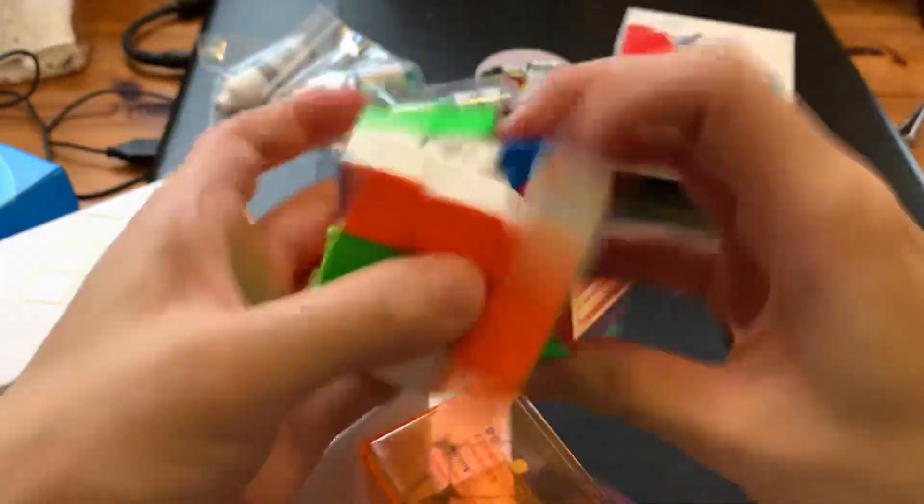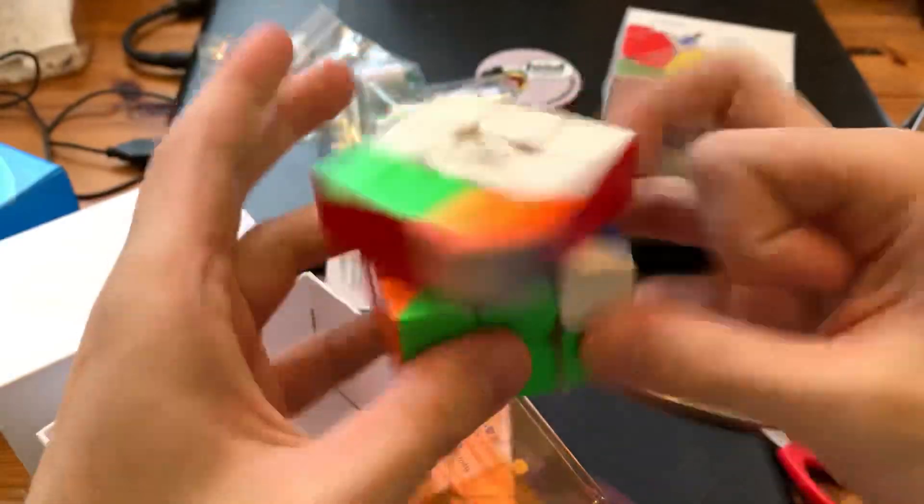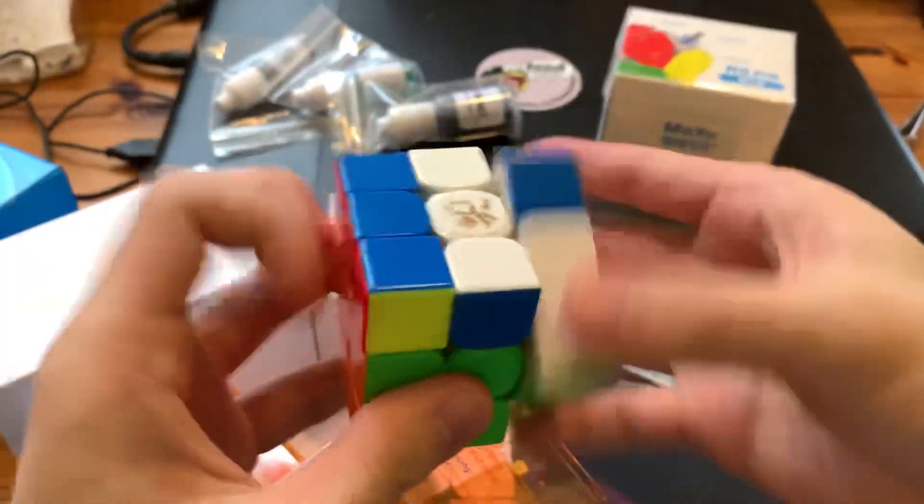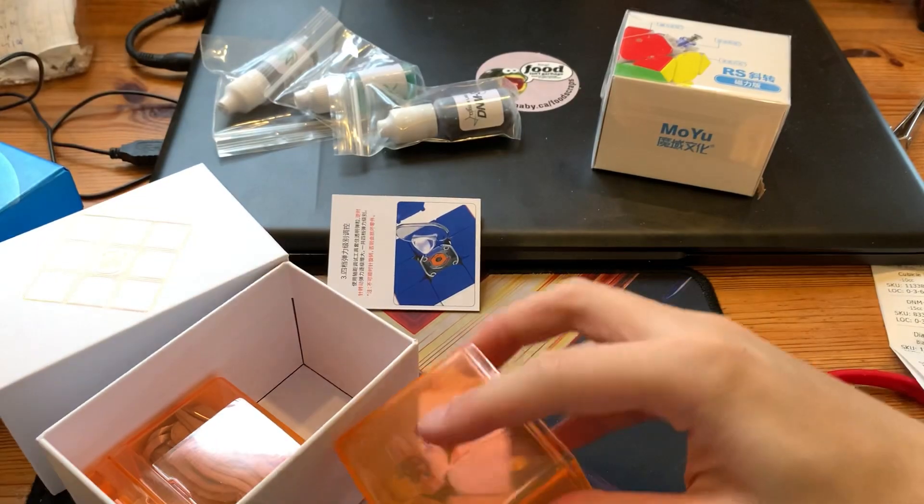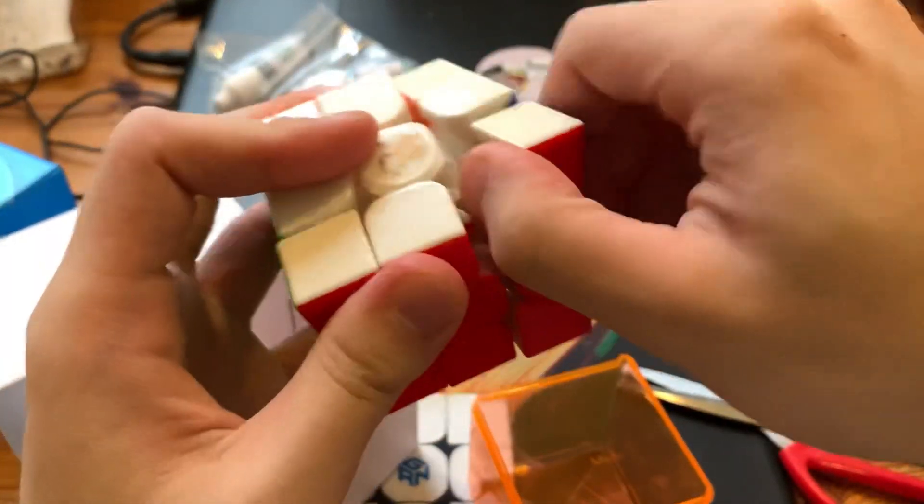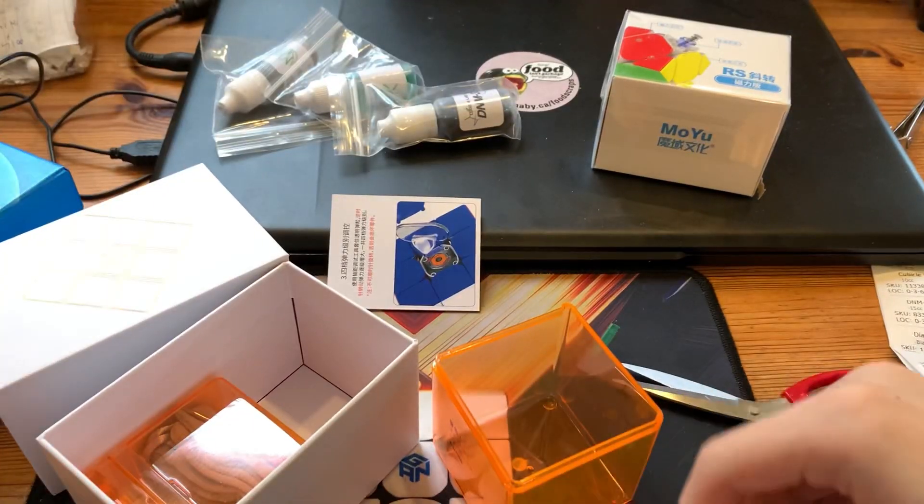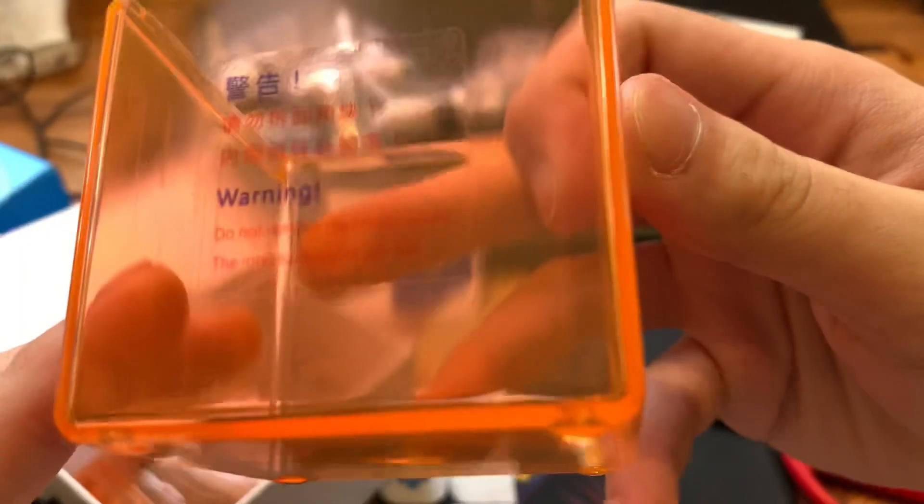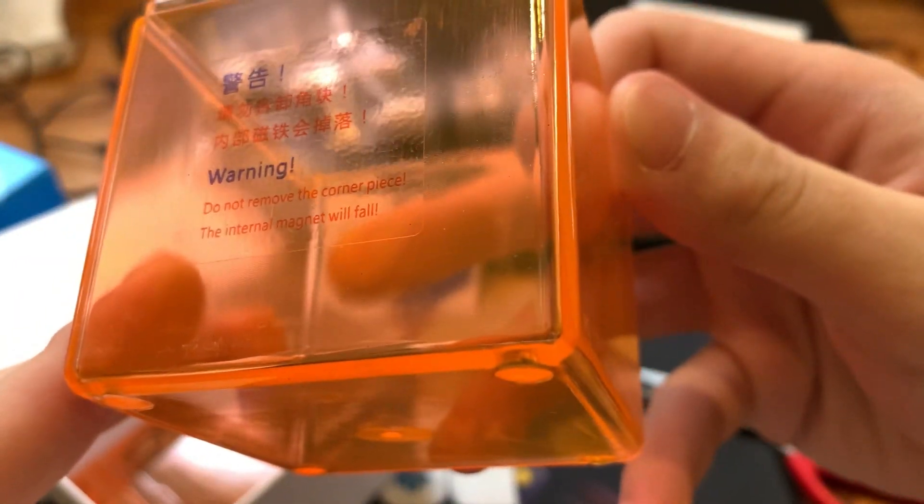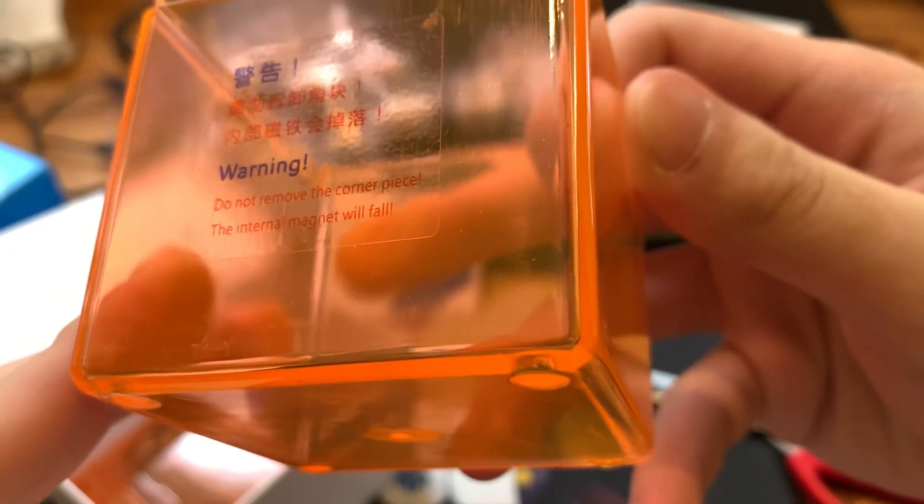Wow, it's really good. I wouldn't say it's better than the MS cube but like still, this is main worthy. And the orange box is just so nice. And also I'll remove a corner. Wait, let's read it again: do not remove the corner piece, the internal magnet will fall. Okay.